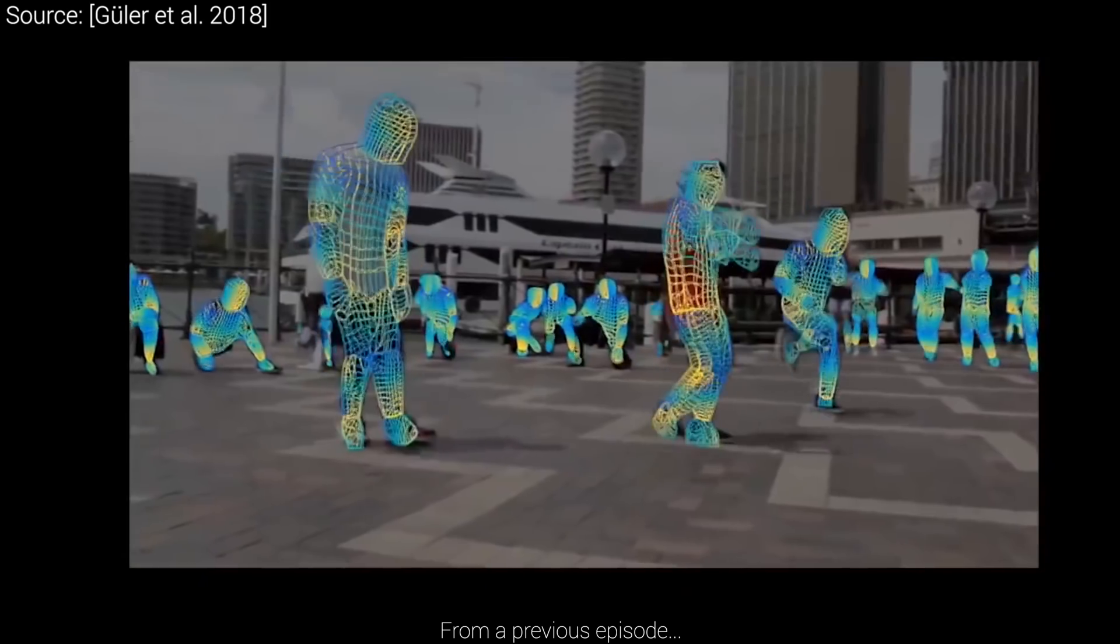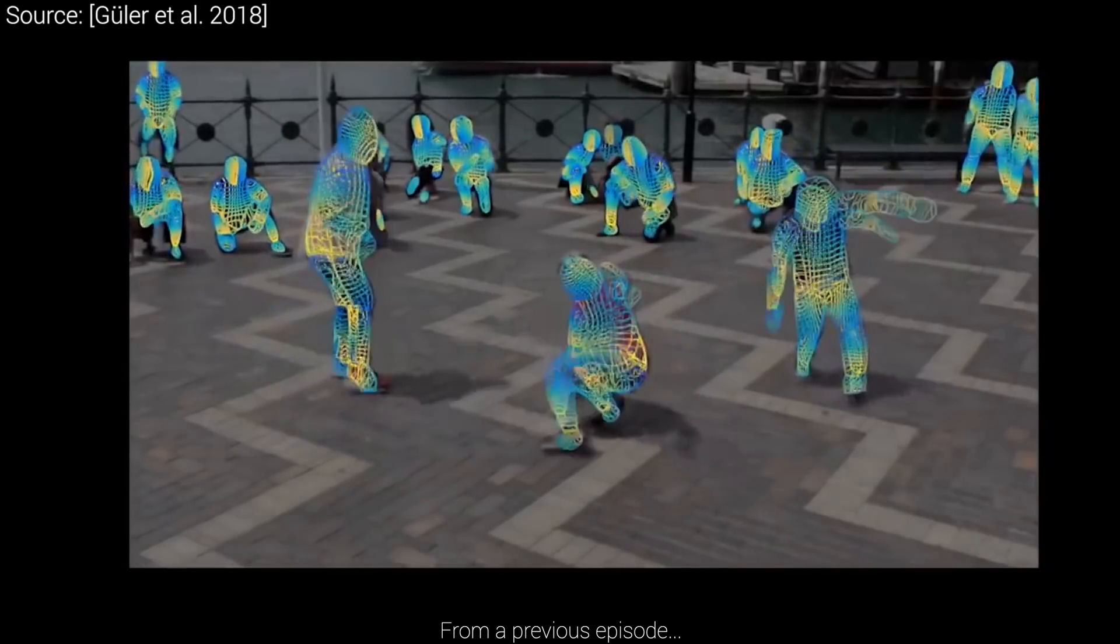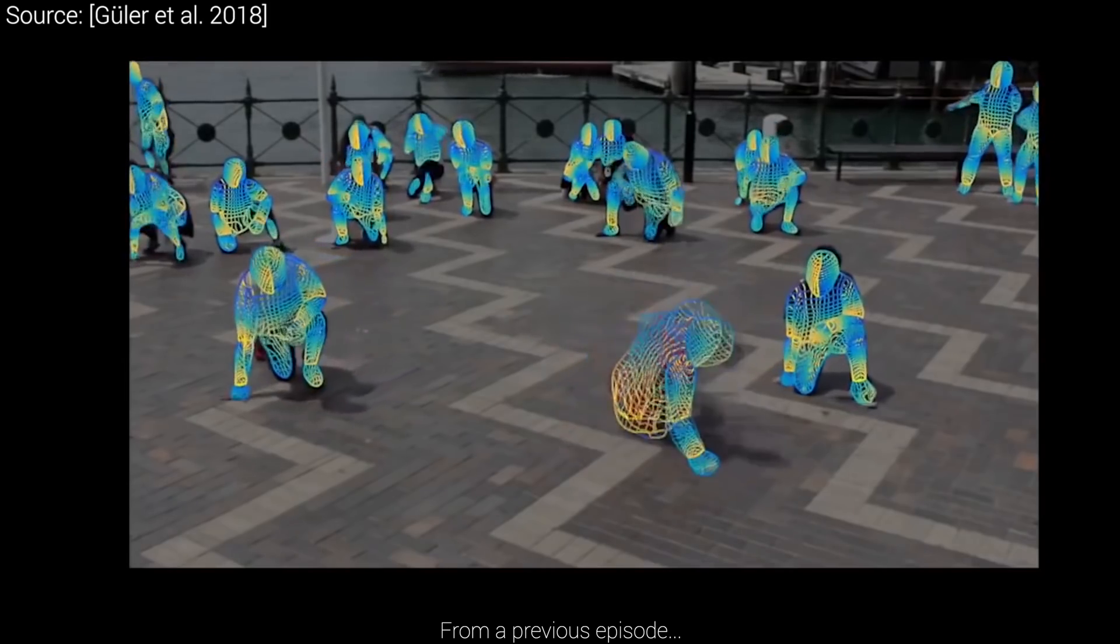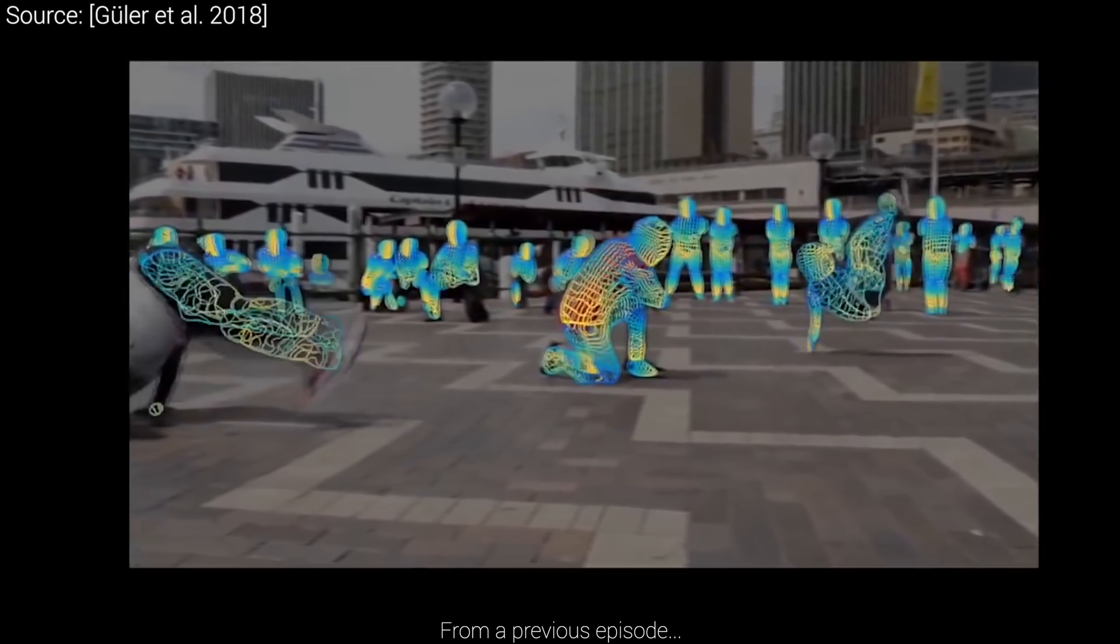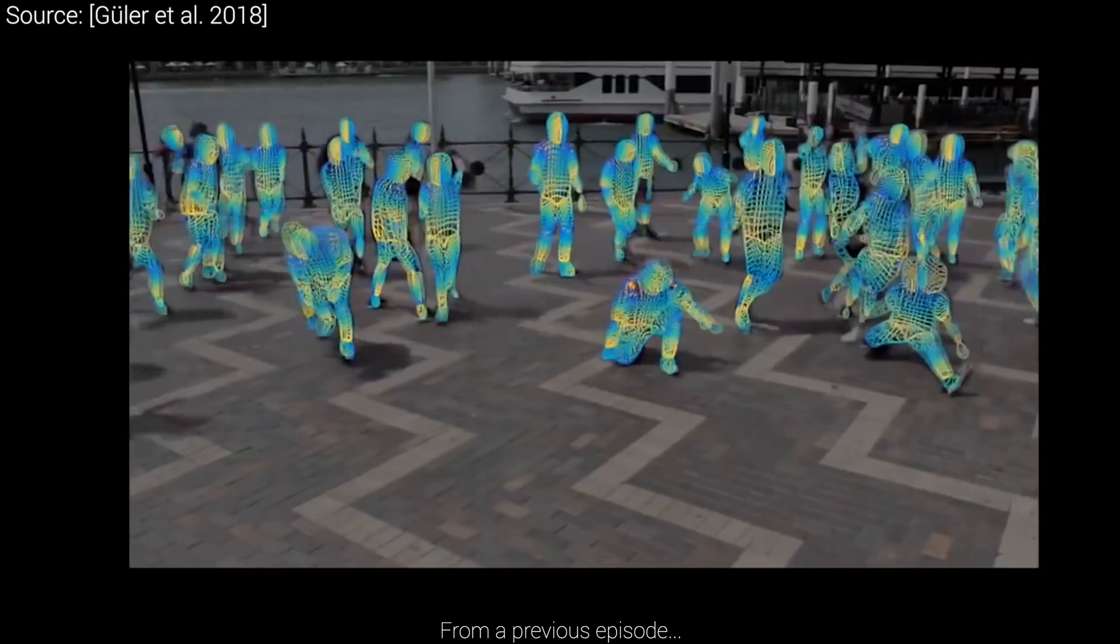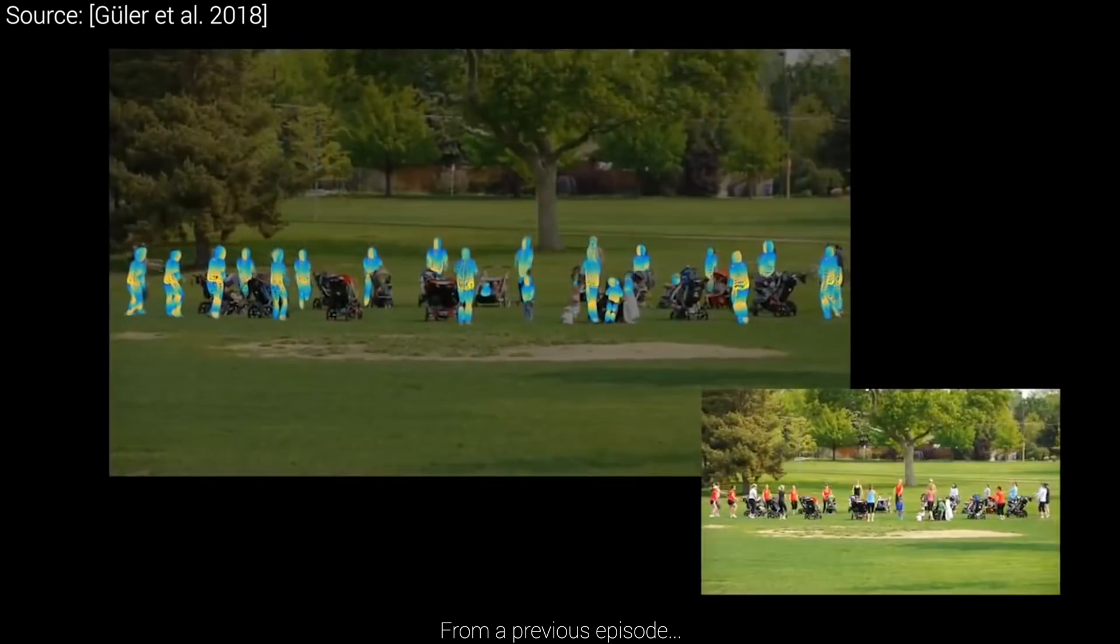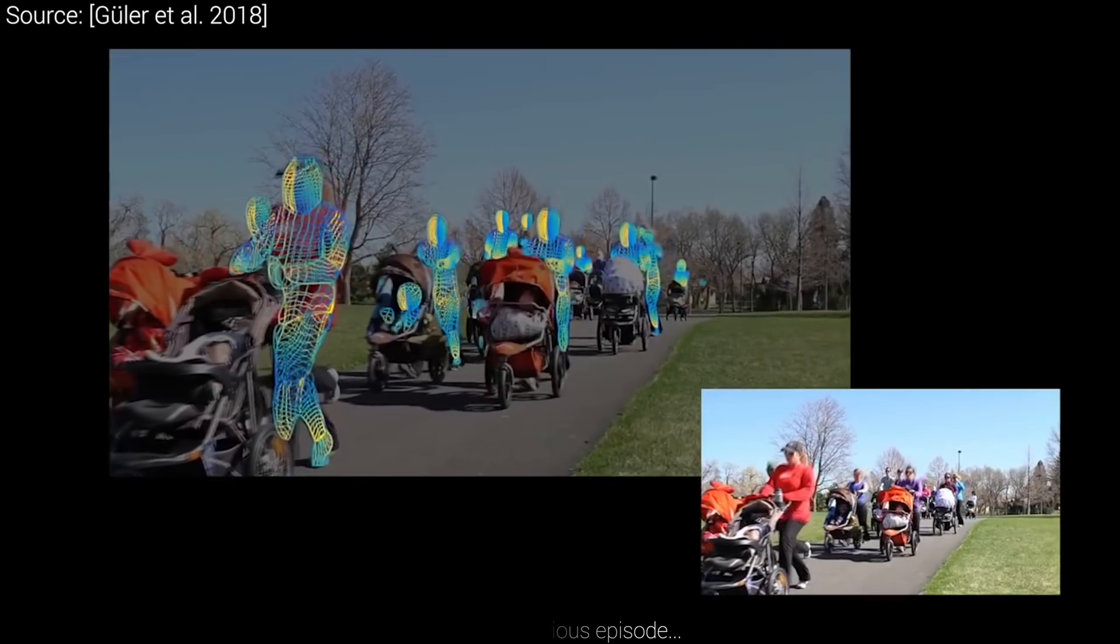So if we can do something like this in real time, that's hugely beneficial for many applications. However, this is a very challenging task, because humans have a large variety of appearances, images come in all kinds of possible viewpoints, and as a result, the algorithm has to deal with occlusions as well. This is particularly hard.